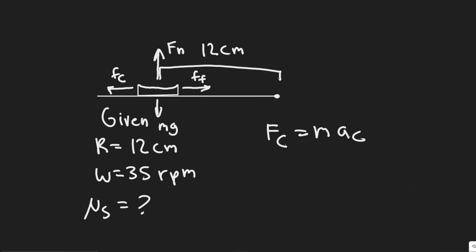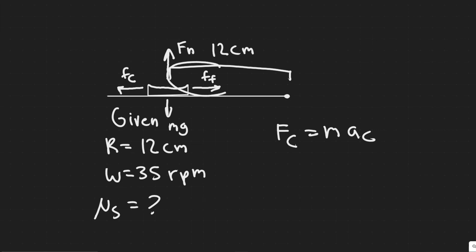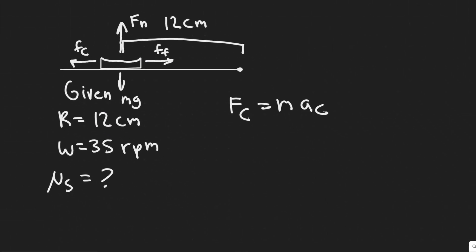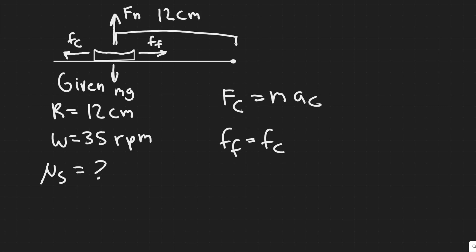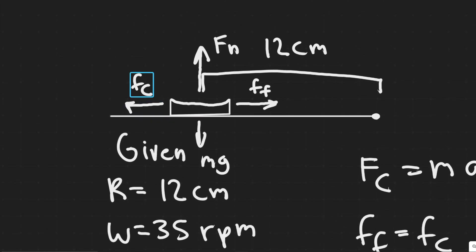We want to find the coefficient of static friction at the point at which sliding is occurring — at 35 RPM. Essentially, we set the force of friction equal to the centripetal force at that point and solve for μs. The key insight is that the force of friction equals the centrifugal force pointing outwards.